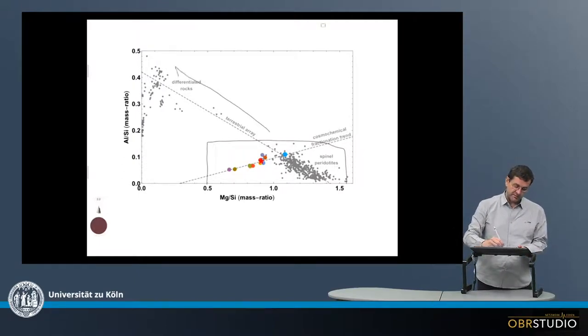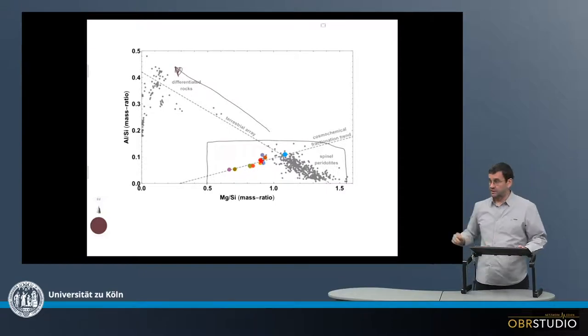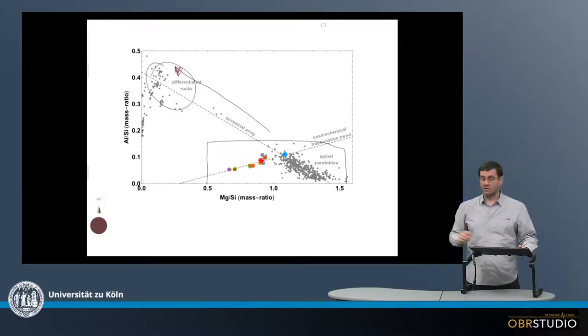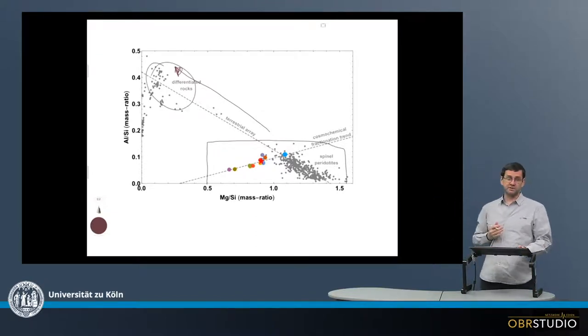And in fact, what we can observe is that there is this kind of direction here towards the differentiated rocks, which plot up here. So these are all rocks that I took from the geo-rock database. And then there's some kind of additional fractionations here when aluminum is removed from the melt.